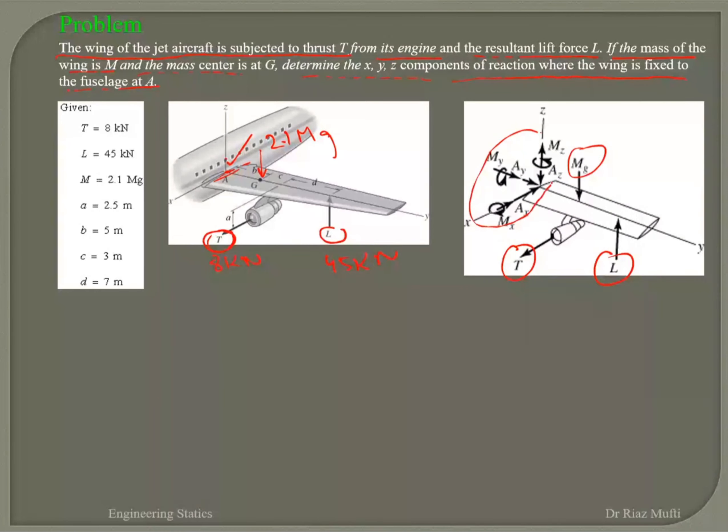And you've got your six reactive forces and moments because the wing is fixed with the fuselage. The wing cannot move in x, y, z direction, and the wing cannot rotate in x, y, z direction.